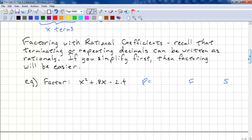Next, factoring with rational coefficients. Recall that terminating or repeating decimals can be written as rationals. If you simplify them first, then factoring is easier. Factor this. This is the tenth decimal place, so we need to convert these to tenths. We have x² + 8/10 x - 24/10. If we're going to divide by 10, we have to multiply the numerator by 10. Let's simplify this: x² + 4/5 x - 12/5.